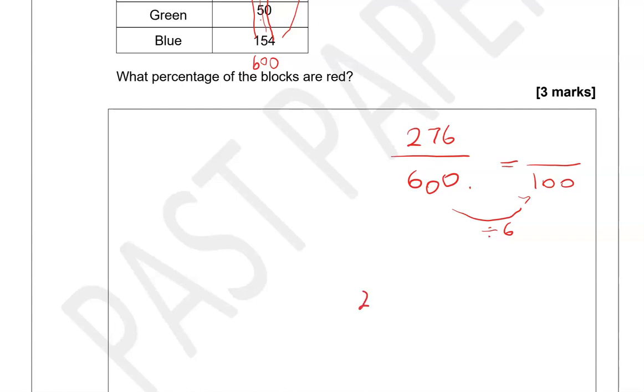So 276 divided by 6. How many 6's would fit into 27? That would be 4 because 4 times 6 is 24. So we have 3 remaining. How many 6's into 36? That is exactly 6. So this is now the same as 46 hundredths. So we know that percentage means out of 100. So this is 46%.